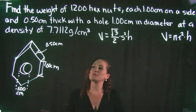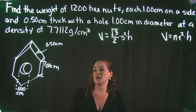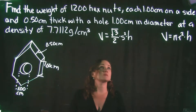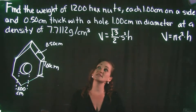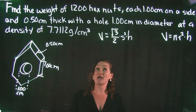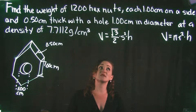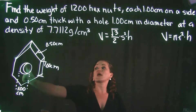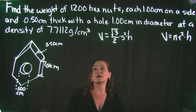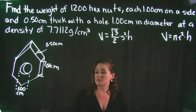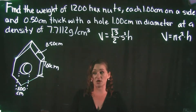This problem deals with the volume of a hexagonal prism. We need to find the weight of 1,200 hex nuts, each 1 centimeter on the side and 0.5 centimeters thick, with a hole 1 centimeter in diameter. Each hex nut has a density of 7.7112 grams per centimeter cubed.